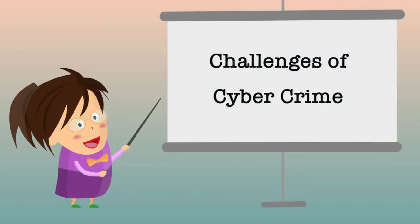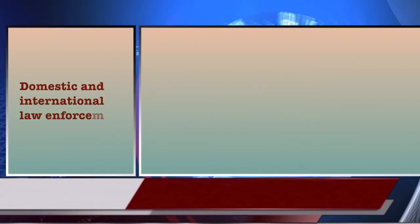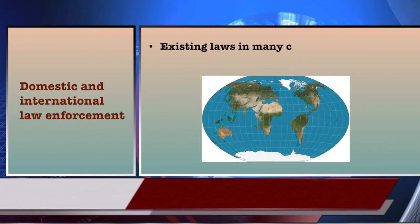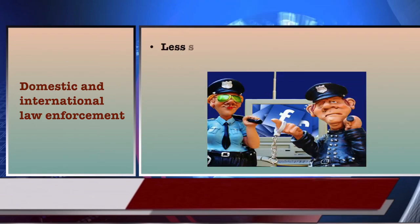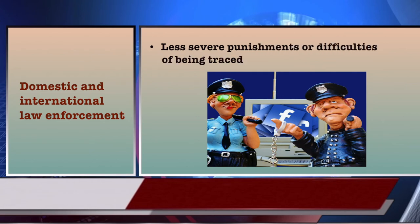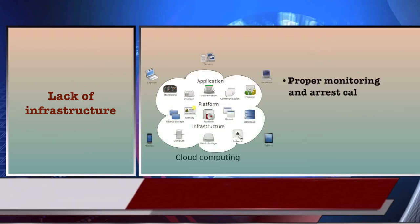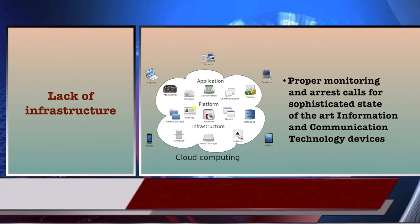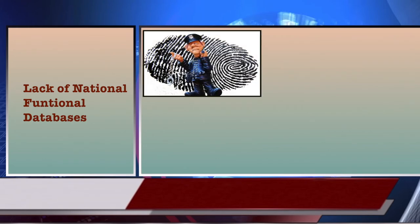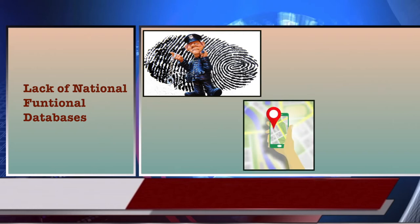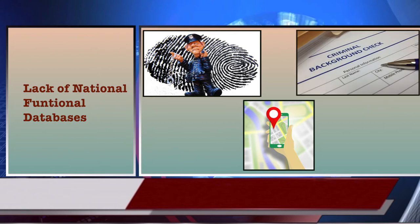Now we will discuss challenges of cybercrime. The first challenge is domestic and international law enforcement. A hostile party using an internet-connected computer thousands of miles away can attack internet-connected computers in any country as easily as if they were next door. It is often difficult to identify the criminal behind such an attack, and even when a criminal is identified, criminal prosecution across international boundaries is problematic. The second challenge is lack of infrastructure — proper monitoring and arrest calls for sophisticated state-of-the-art information and communication technology devices. The third challenge is lack of national functional databases, which could serve as a means of tracking down criminals by checking into past individual records and tracking their movements.